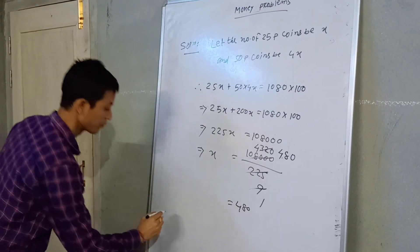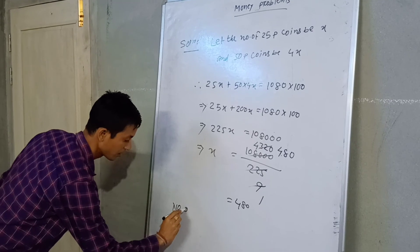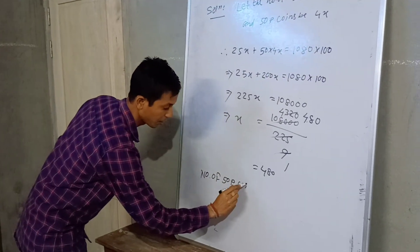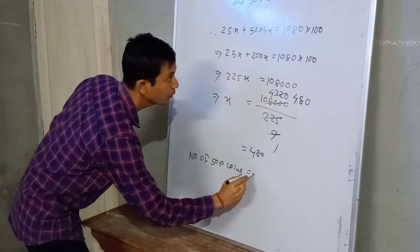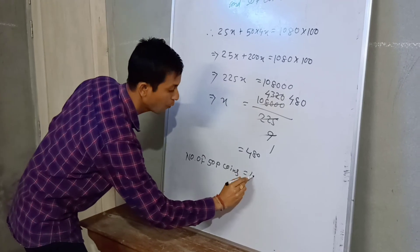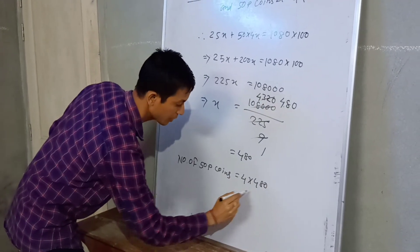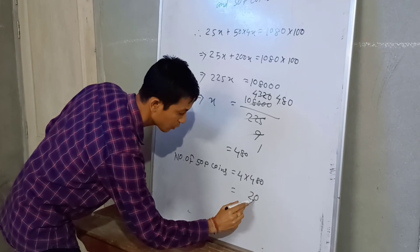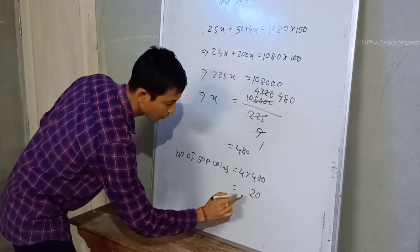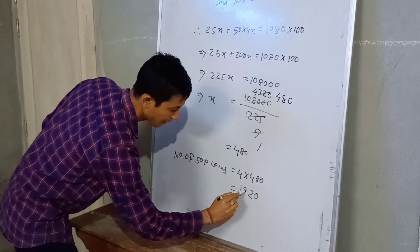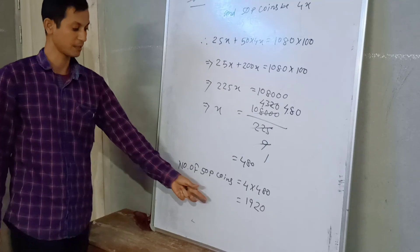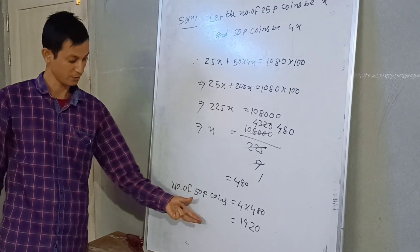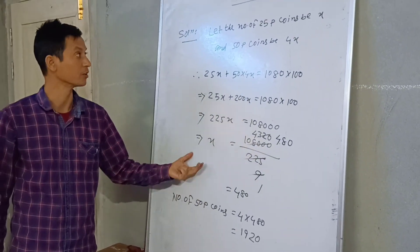The number of 50 paisa coins is equal to 4 into 480. That means 4 times 480 equals 1920. So the number of 50 paisa coins is 1920. I hope you understand. Keep continuing.